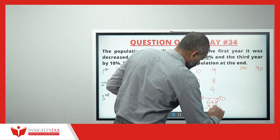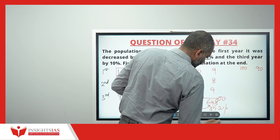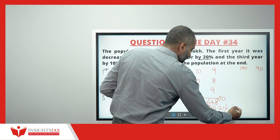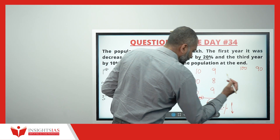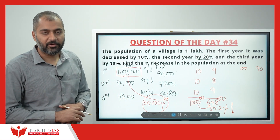For every 100, it becomes 64.8. Hence, 35.2 percentage is the decrease in the population.